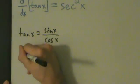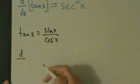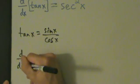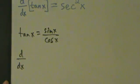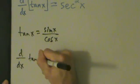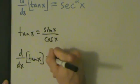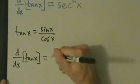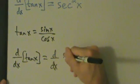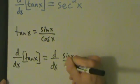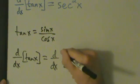So let's go ahead and prove this. It actually won't be that bad—it's pretty much just going to be a quotient rule directly. So d/dx of tan(x) = d/dx of [sin(x)/cos(x)].